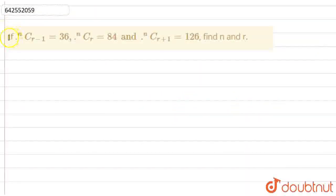Hello everyone, so the question is if NCR-1 is equal to 36, NCR is equal to 84 and NCR+1 is equal to 126, we have to find the value of N and R.